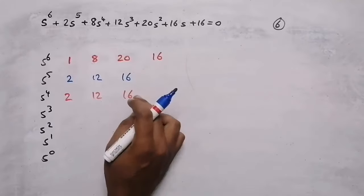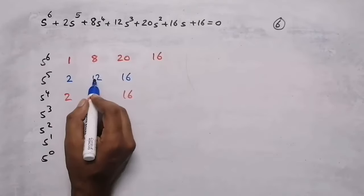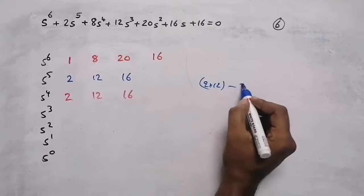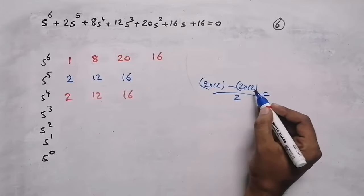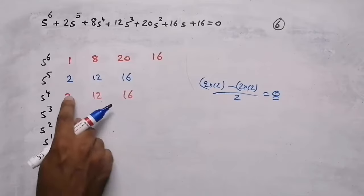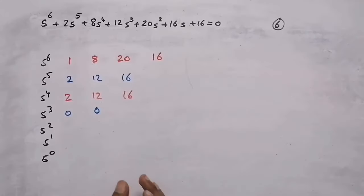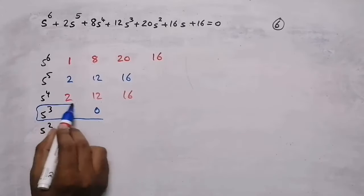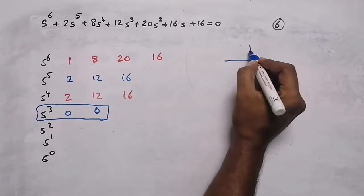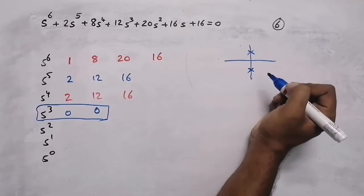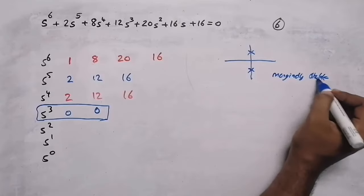As you can see, two rows are common, indicating there is going to be a problem. Computing the next row: (2×12 − 2×12)/2 = (24−24)/2 = 0, and (2×16 − 2×16)/2 = 0. All values in this row are zero. When all values in a row are zero, it indicates there are poles on the imaginary axis, meaning the system is marginally stable.